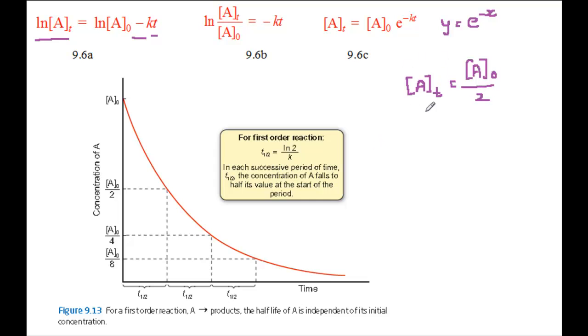If you substitute this expression for A t into equation 9.6b, you get log concentration of A at time t, which is now the initial concentration of A over 2 times the initial concentration, and that equals minus k t, which is now t a half. The initial concentration of A cancel out, which leaves you with log 1 over 2, which is the same as minus log 2.